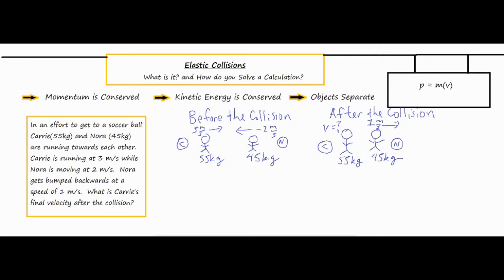Now that we have everything laid out, all we need to do is find the momentum of each person involved before and after the collision. We'll have one unknown variable — the velocity of Carrie — and then we can do some algebra to solve for that.